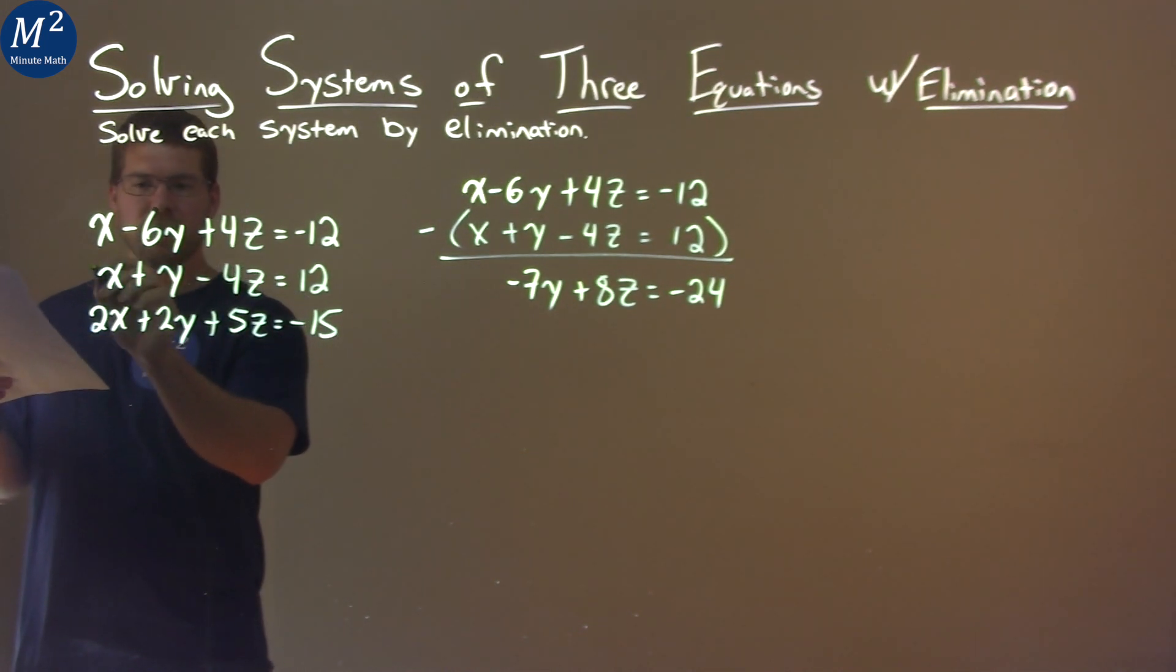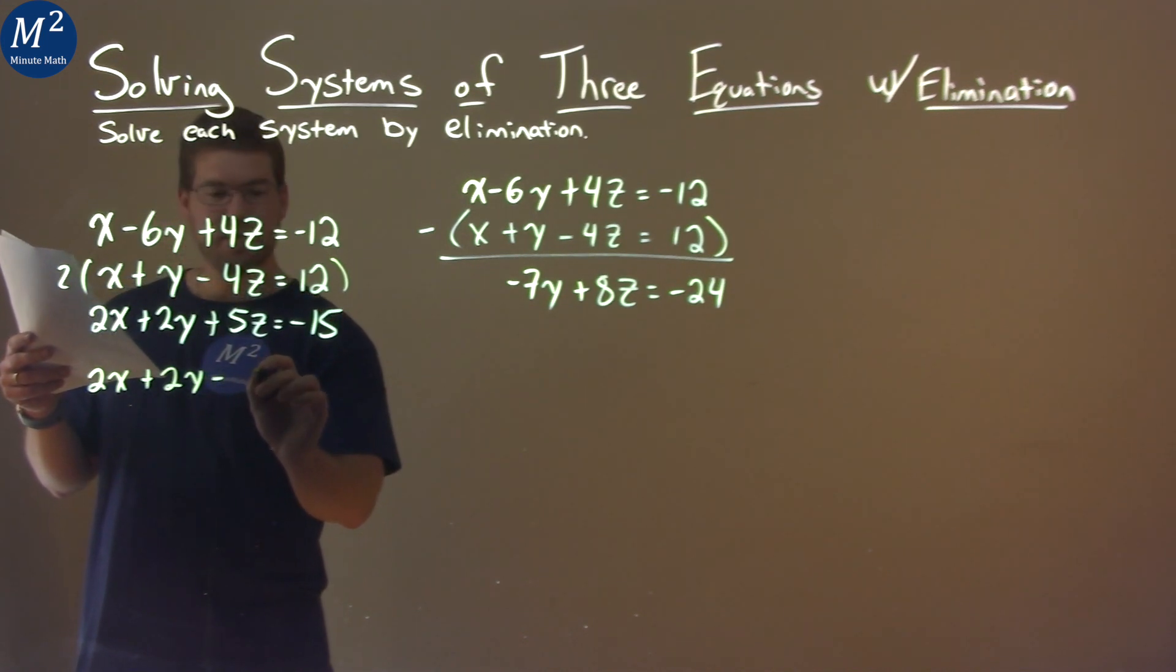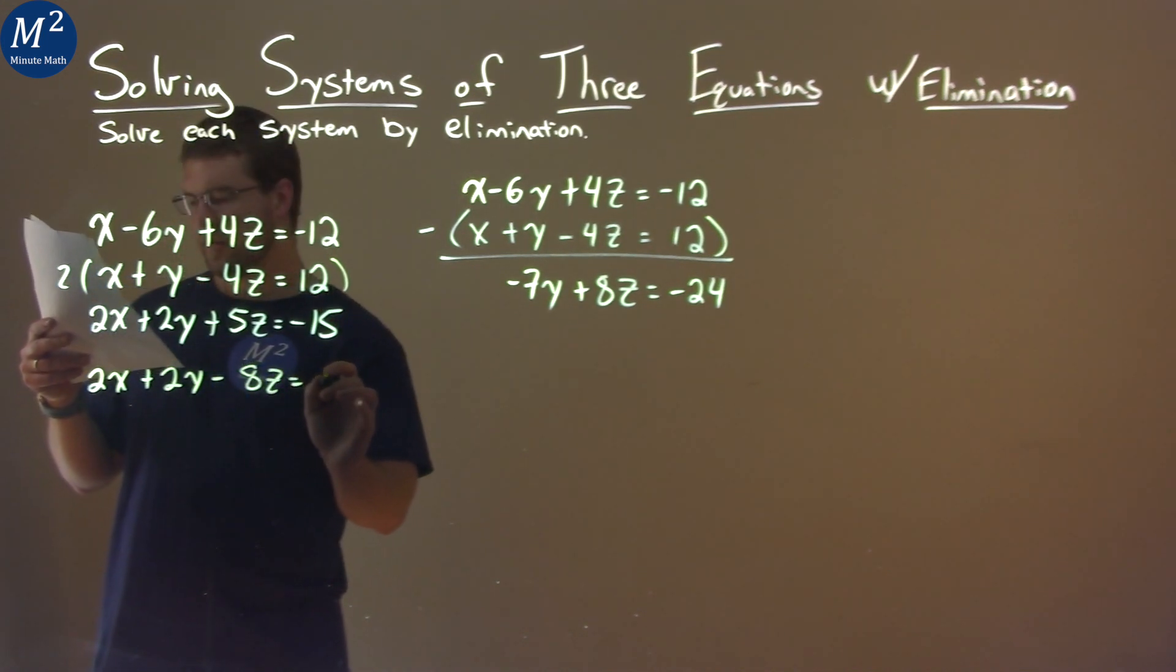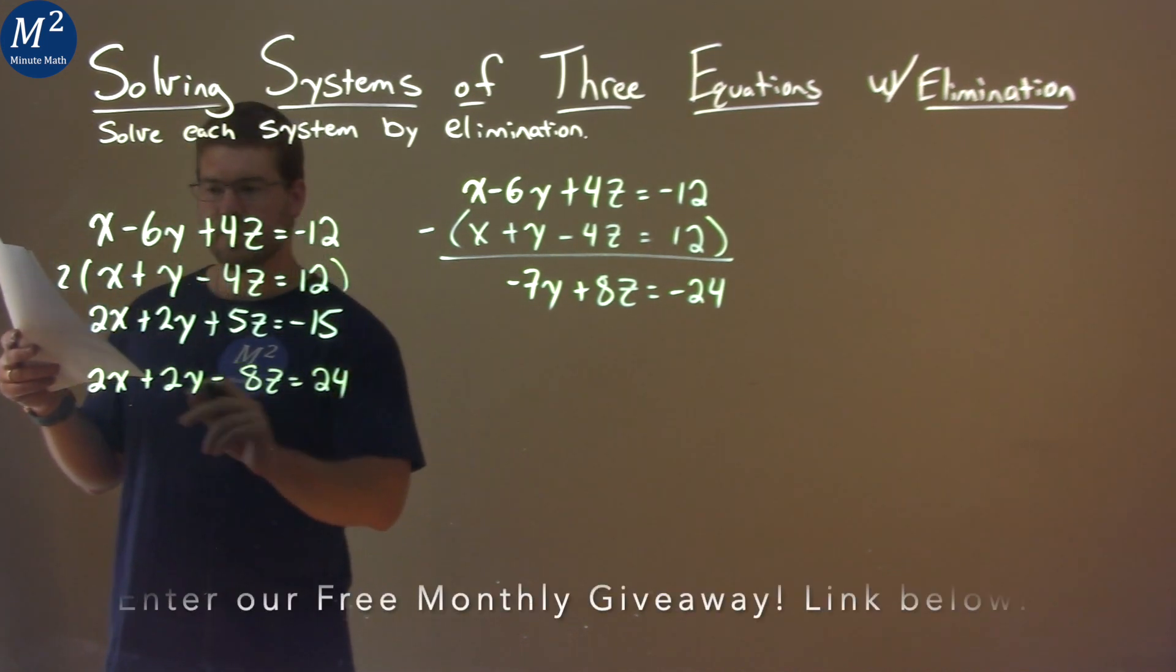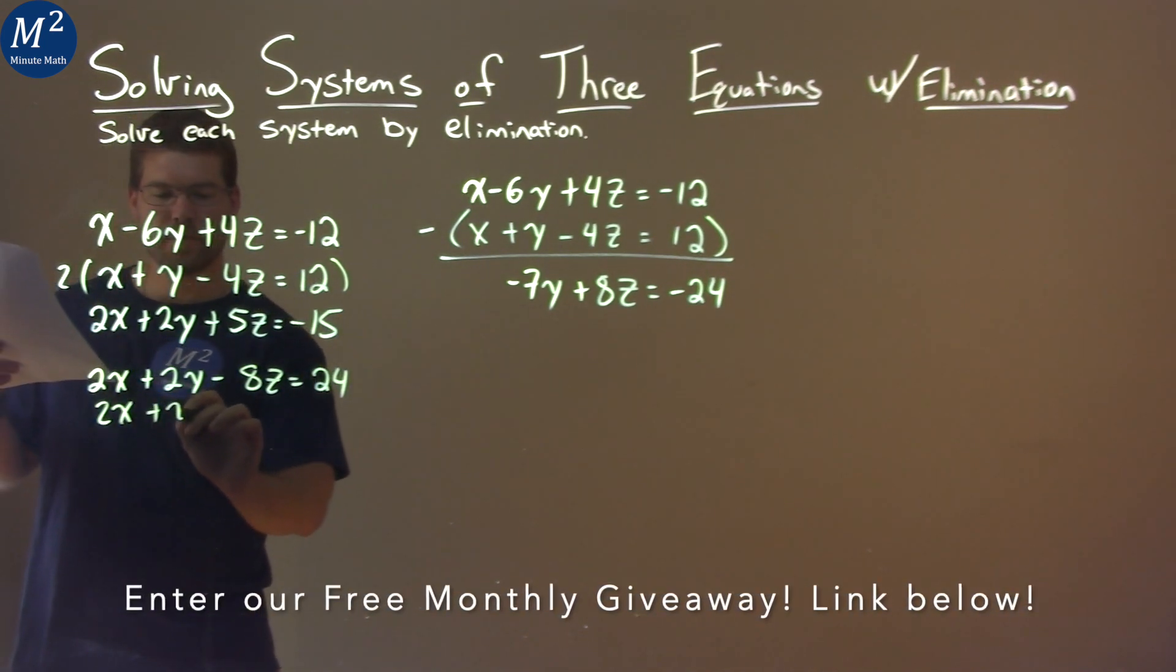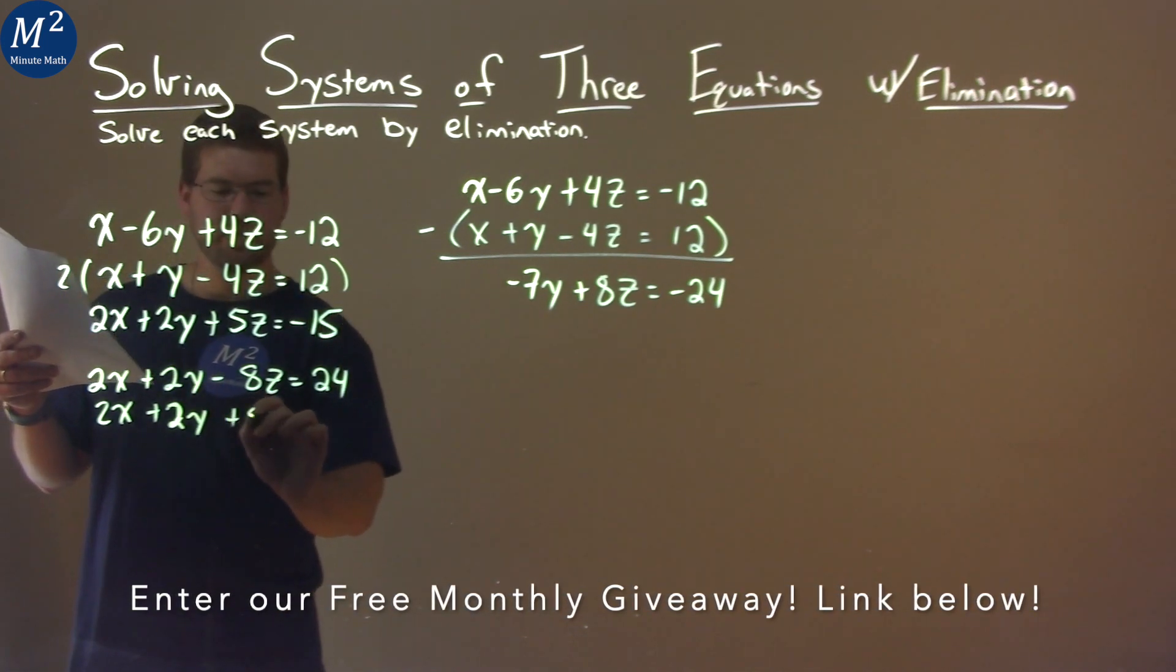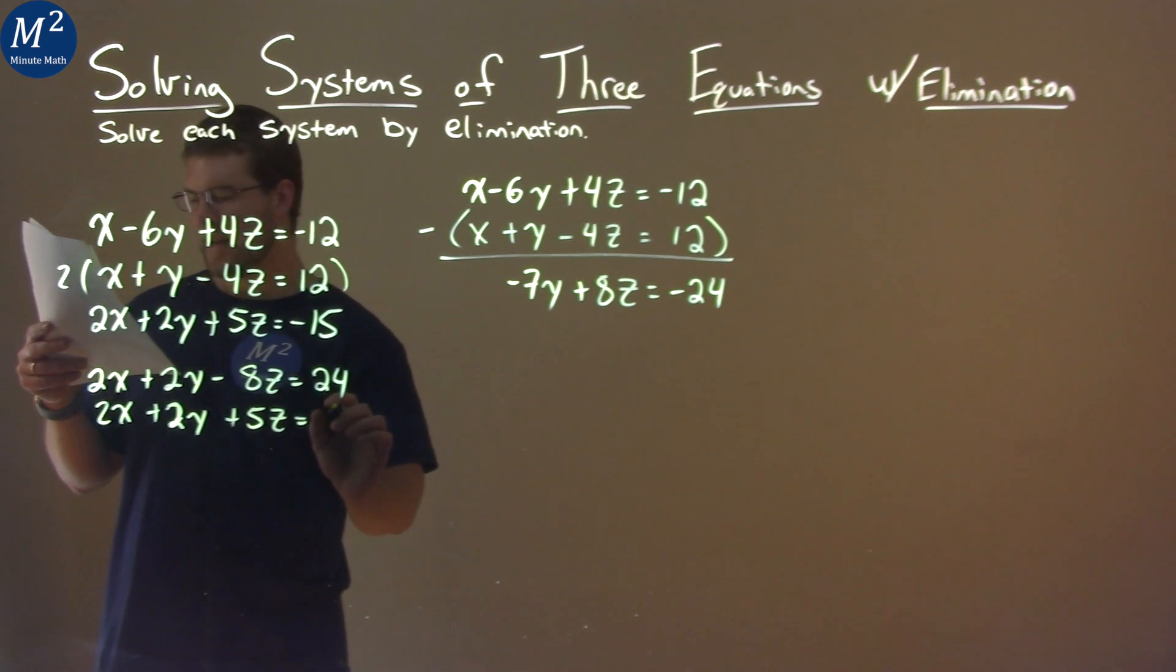So I multiply this whole thing by 2 here, and we're left with 2x plus 2y minus 8z equals positive 24. Bring down the third equation here: 2x plus 2y plus 5z equals negative 15.